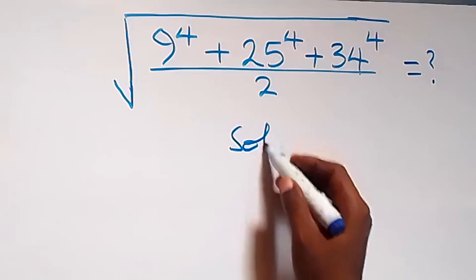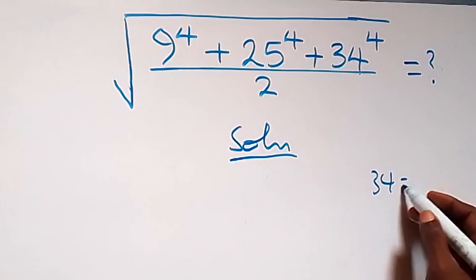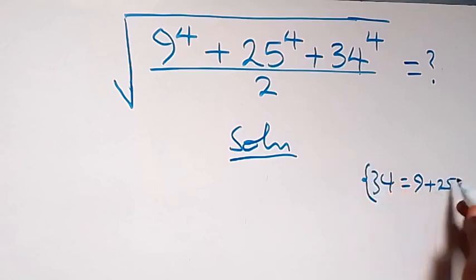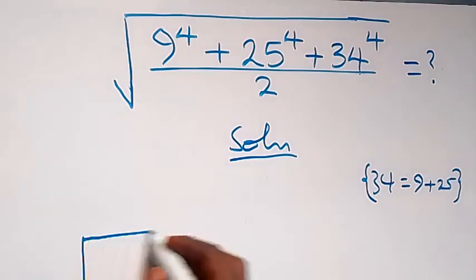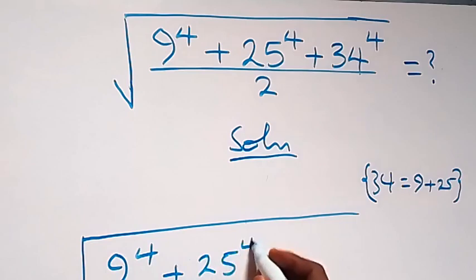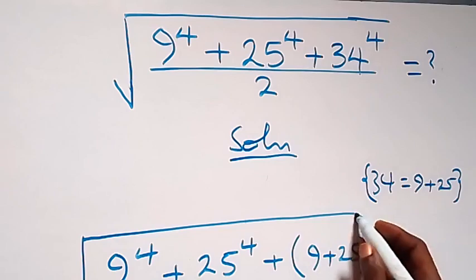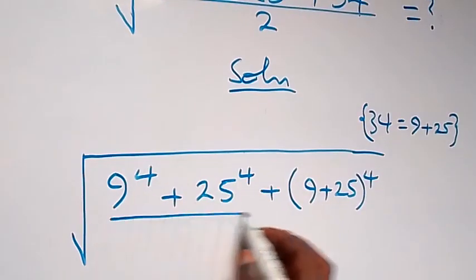From what we have here, we can rewrite 34 as 9 plus 25. That is, we can write this as square root of 9 raised to the power of 4, then plus 25 raised to the power of 4, plus 9 plus 25 all raised to the power of 4, then we have everything here divided by 2.